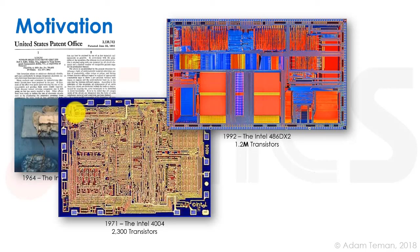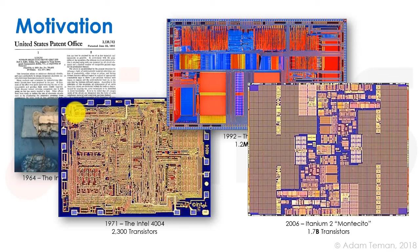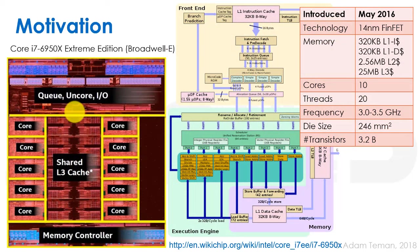We went three orders of magnitude higher from a thousand transistors to a million, and of course we've long surpassed that. By 2006, Intel put out the Itanium II Montecito processor with 1.7 billion transistors. There's been a lot of advance and progress in this field, and the integration of transistors has grown exponentially according to Moore's law.